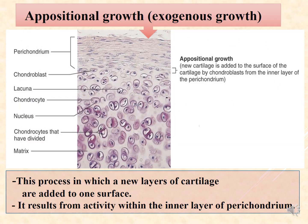Appositional growth (exogenous growth): in this process, new layers of cartilage are added to the surface of the existing cartilage — not from within. This results from the activity of the inner layer of the perichondrium, which contains chondrogenic cells and chondroblasts that form new cartilage layers added only to the surface.